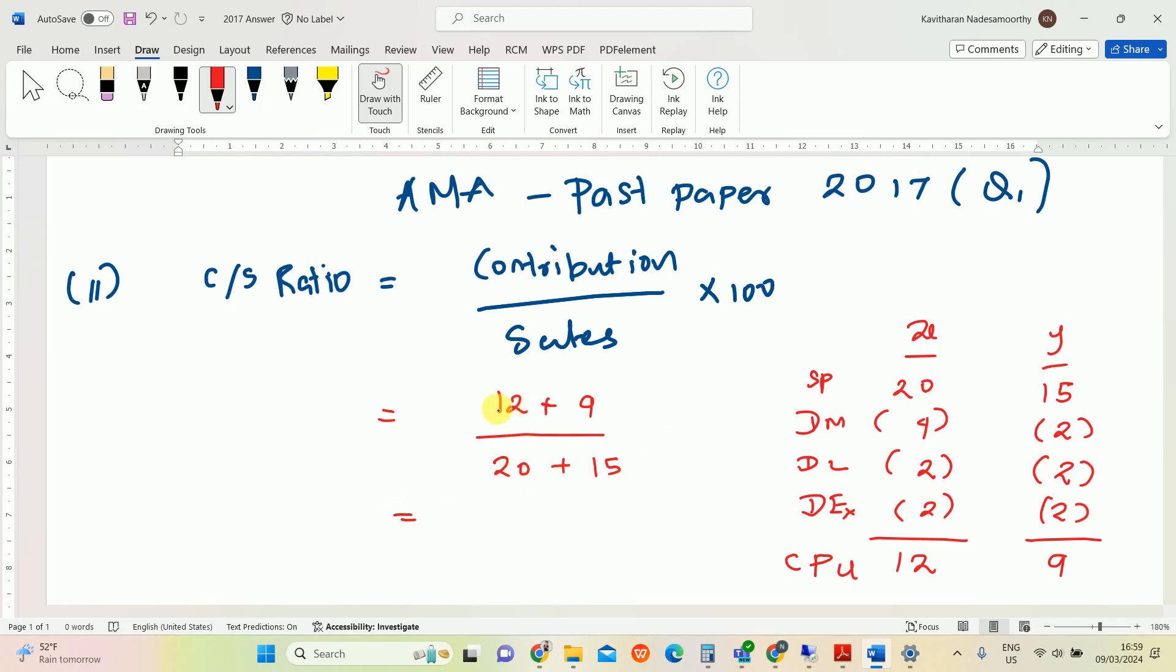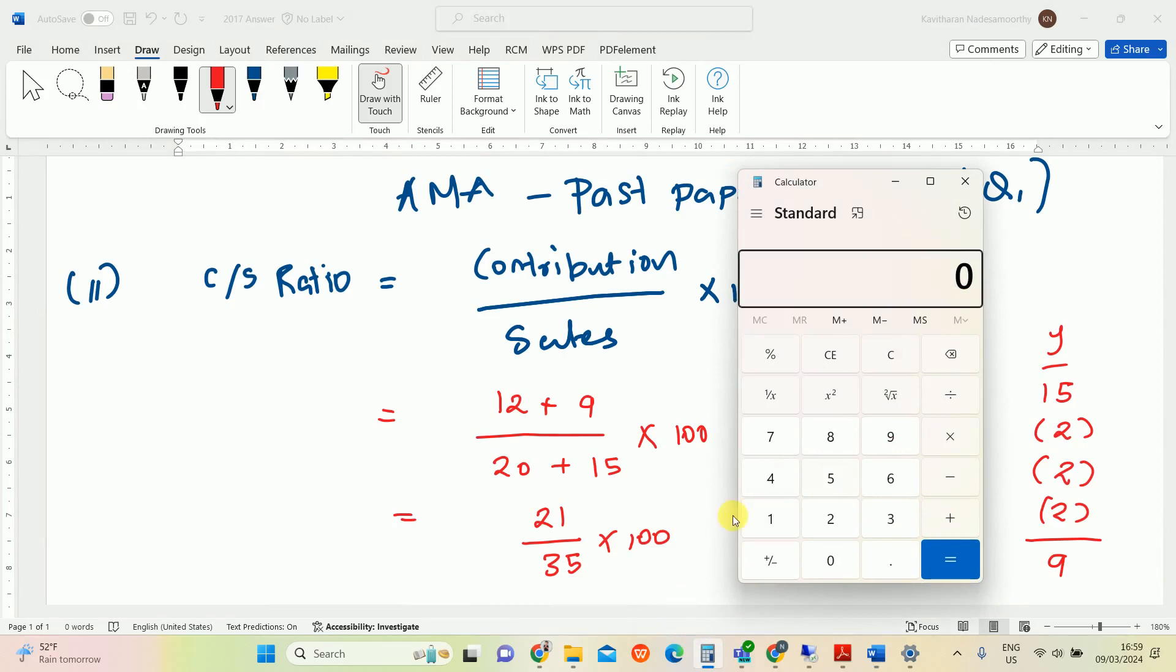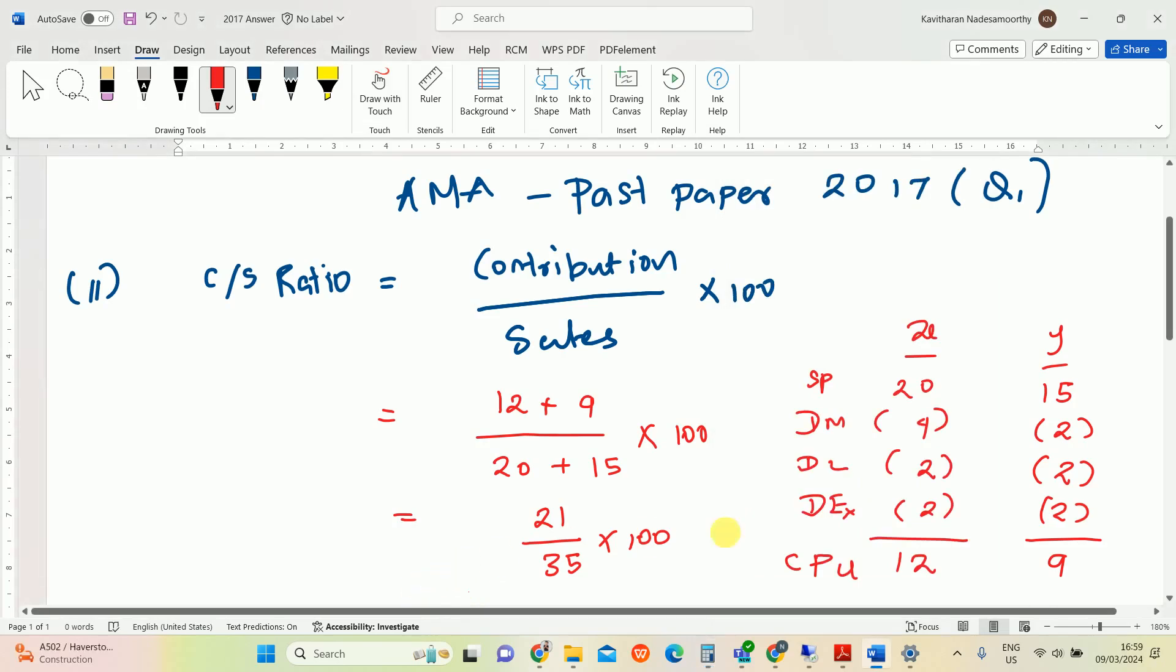Sales price per X is 20 plus Y is 15. So 12 plus 9, 21 divided by 35 into 100. Let's calculate: 21 divided by 35 into 100, so the answer is 60 percent.